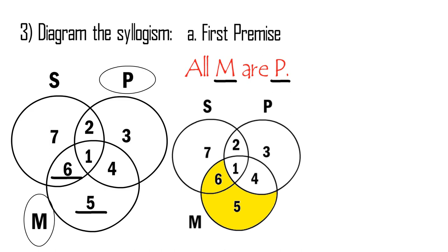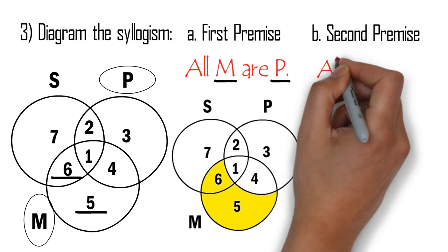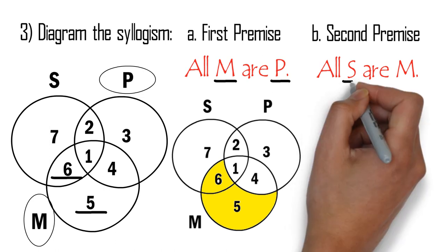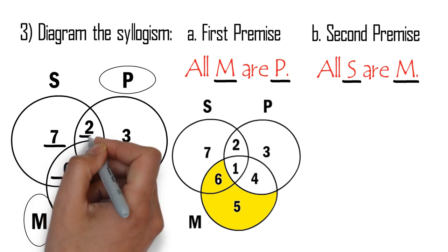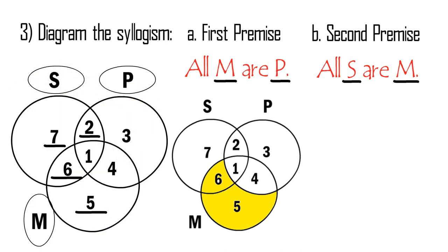After diagramming the first premise, let us proceed to diagram the second premise: all S are M. This time, the premise talks about S and M only, so we will imagine that the circle for P does not exist. Since the premise says all S are M — that is, all members of S are members of M — we will shade areas 7 and 2 to show that all members of S, which is area 1, are part of M. Now the diagram looks like this.